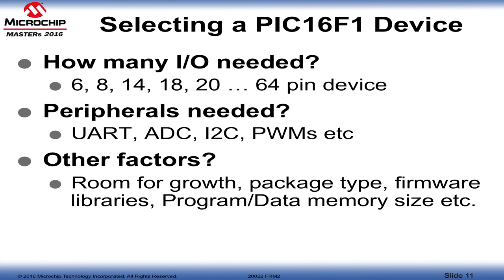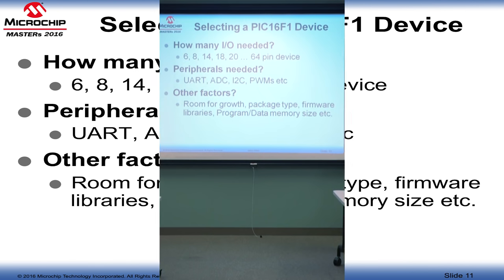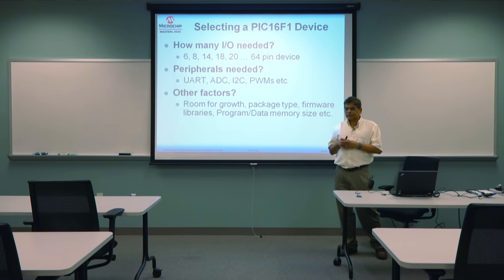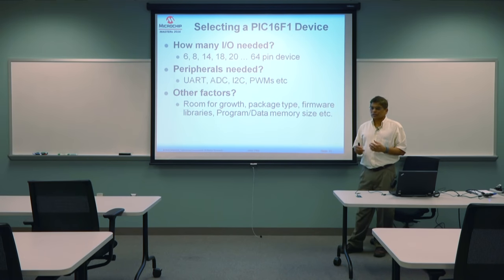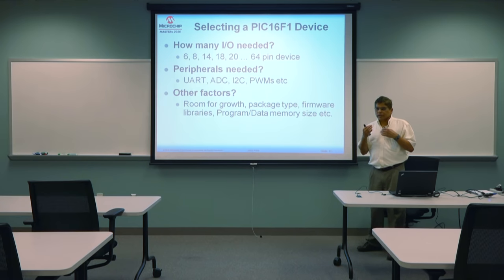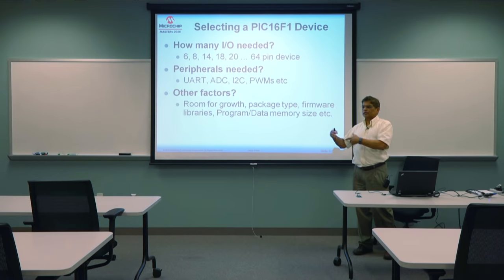Some challenges when designing a project include selecting the right device. The first question is how many I/O lines you need — you may have 6, 8, or 14 pins. The second question is what peripherals you'll use: GPIO, serial UART, ADC, I2C, PWM, etc. Another factor is room for growth — if marketing asks for more features, you'll need more program or data memory. Microchip offers several devices in the same family with twice the memory size.